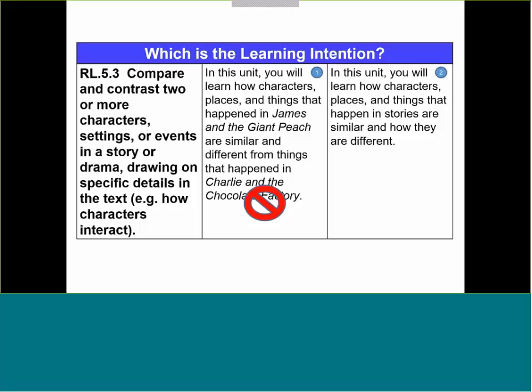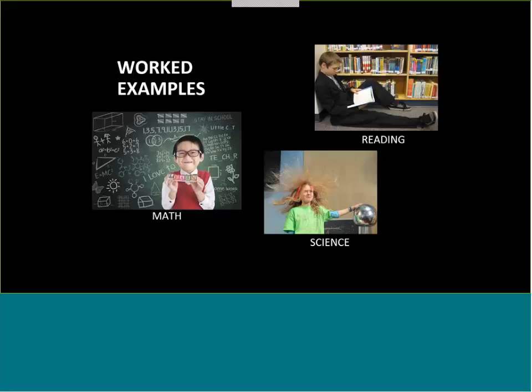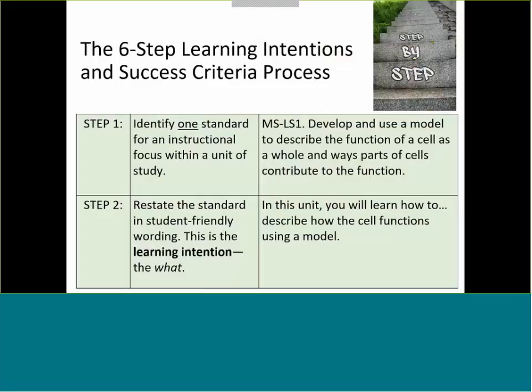We have several worked examples in the workbook that we've put together — math, reading, science. I thought I would pull out one science example to illustrate the steps. This is a next generation science standard for middle school, and it works in all content areas and all grade levels. You'll notice the standard is stated in step one, but the translation — 'Describe how the cell functions using a model' — communicates more effectively what this is about.